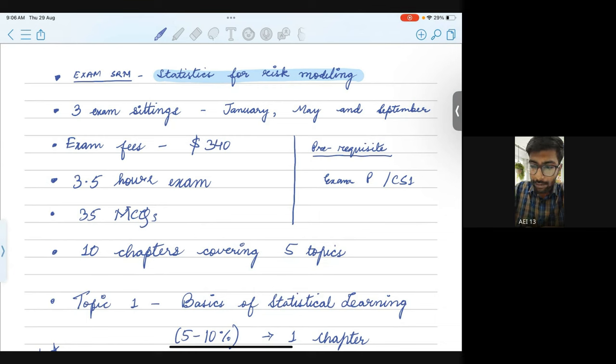If you compare it with the IFOA or IEI equivalent, it is similar to exam CS2. But not too similar. I would say it's around 40% similar because the topics in CS2 are more advanced in the sense of like you have that entire thing called Markov and then you have the other risk models which is not there in SRM. So that is the main difference.